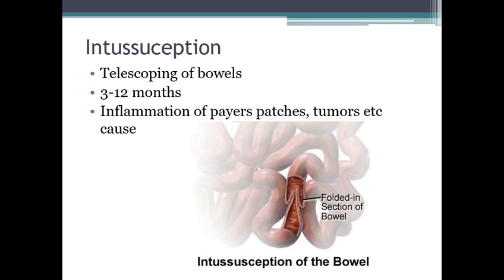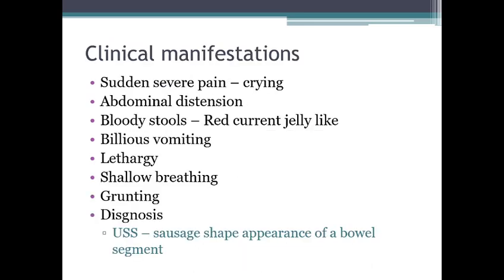Intussusception is a telescoping of bowel segments occurring mainly between 3 to 12 months of age, caused by inflammation of Peyer's patches, tumors, etc. Like a telescope where two pipes slide through each other, in intussusception one part of the bowel invaginates into the adjacent part of the bowel.